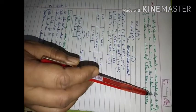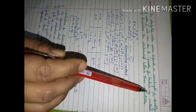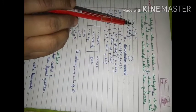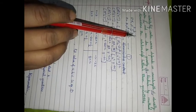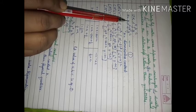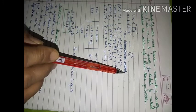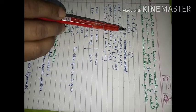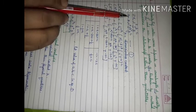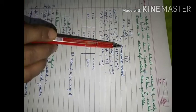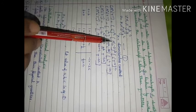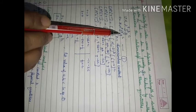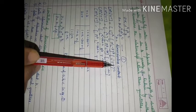Let us consider one more example. The velocity v of a water wave depends on wavelength, density of water, and acceleration due to gravity. We have to find the relation. The first step is to consider velocity is directly proportional to wavelength raised to power a, density raised to power b, and acceleration due to gravity raised to power c. Removing the proportionality sign introduces dimensionless constant k. Writing dimensions: velocity is M⁰L¹T⁻¹, wavelength has dimension L raised to power a, and density (mass per unit volume) has dimensional formula M¹L⁻³ raised to power b.